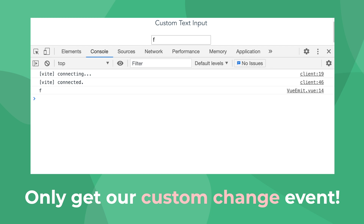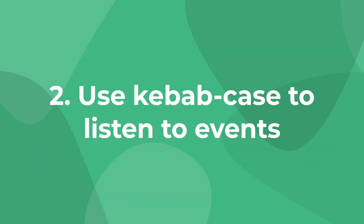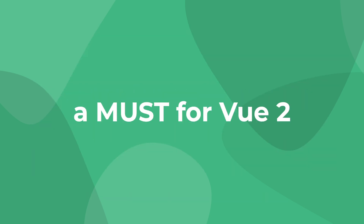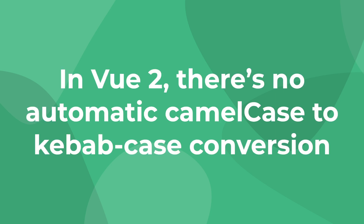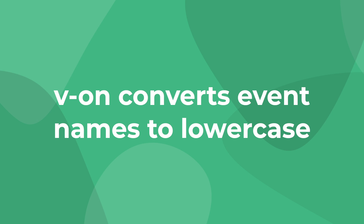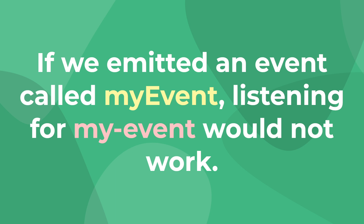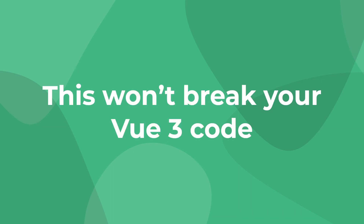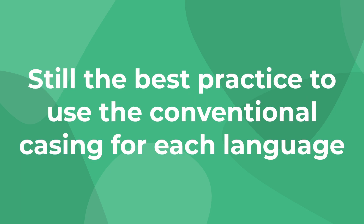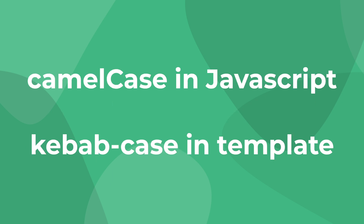The second tip is to use kebab case when listening to events. This is essential if you're still using Vue 2, because in Vue 2, event names do not have automatic camel case to kebab case conversion, and the v-on directive automatically converts your event names to lowercase. This means certain camel case named events will be impossible to listen to. In Vue 3, event names, like props and components, are automatically converted between the different cases. So while it won't break your code, it's still best practice to stick to each programming language's conventions and use camel case in your JavaScript and kebab case in your HTML.